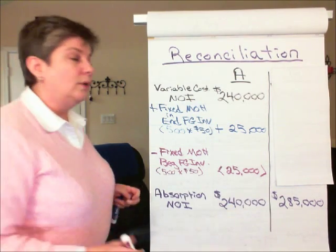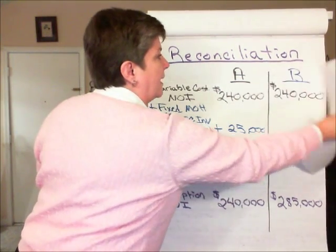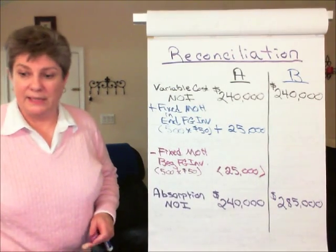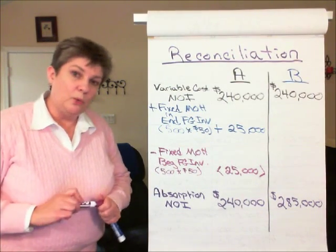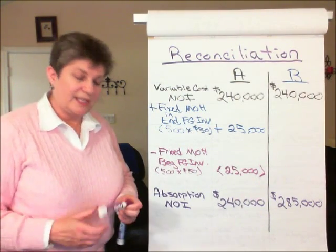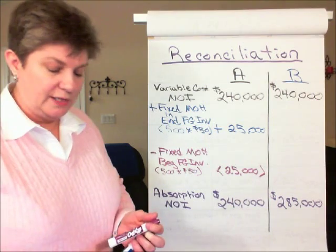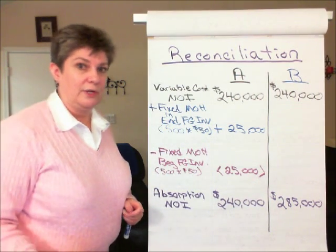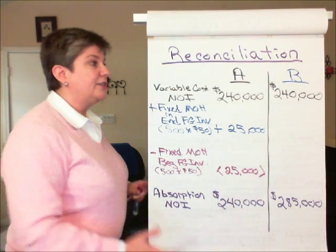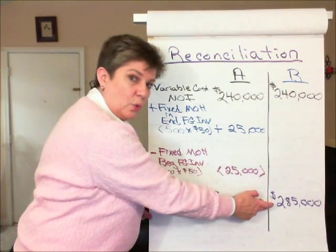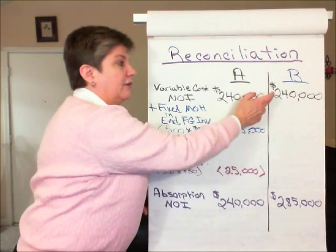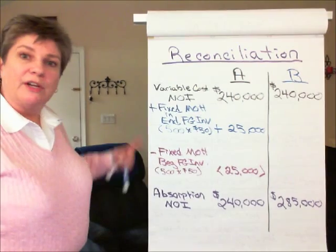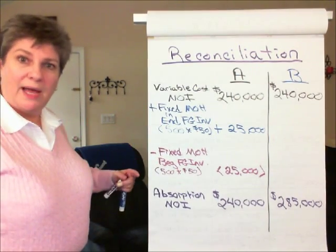Now let's take a look at Scenario B. In Scenario B, we produced 10,000 units but only sold 9,000, so there is a difference in income under absorption costing from that under variable costing. The adjustment is going to follow the same pattern.